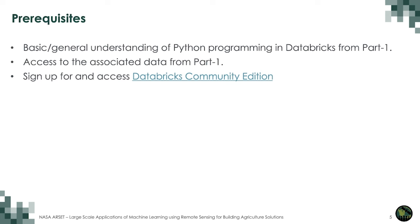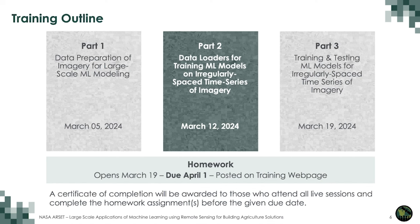The prerequisites for the second part of this training are a general understanding of Python programming in Databricks from Part 1, access to the associated data from Part 1, and signing up for and accessing the Databricks Community Edition. A link to sign up is provided on the slide. Over these three weeks, there will be three one-and-a-half-hour sessions including presentations, demonstrations, and question-and-answer sessions. All materials, code, and recordings from each session will be available from the training webpage. A recording will be made available within 48 hours of the training day on the RSET website.